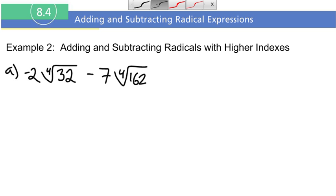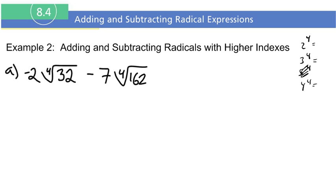Let's find the fourth root of 32. We need a number with a perfect fourth power that goes into 32. Writing out fourth powers: two to the fourth is 16, three to the fourth is 81. Since 16 divides into 32, we can rewrite the fourth root of 32 as a product of two radicals.